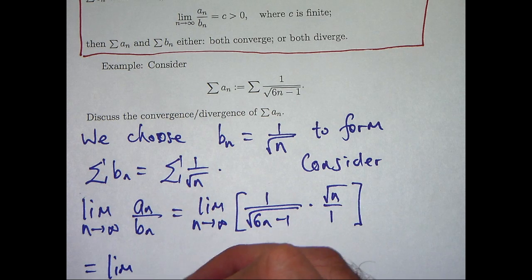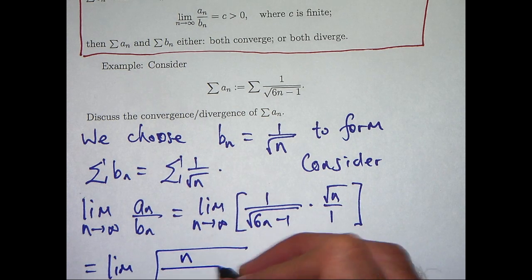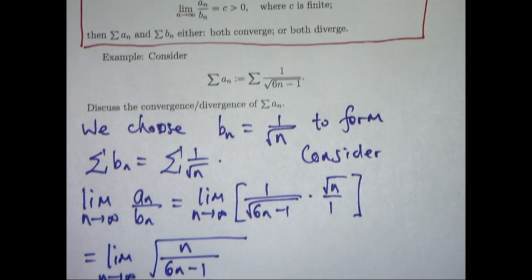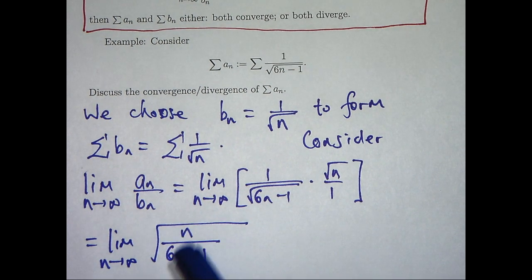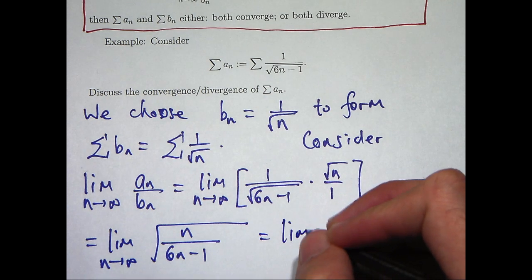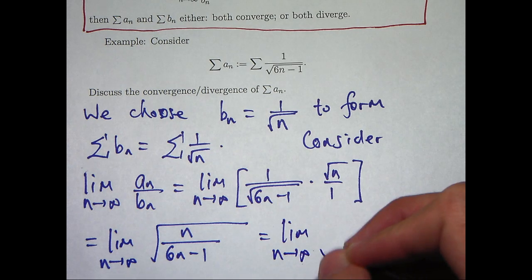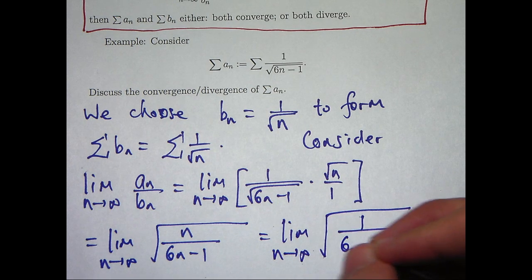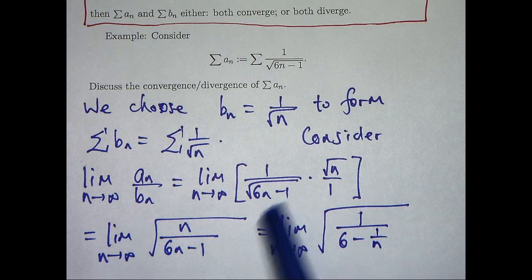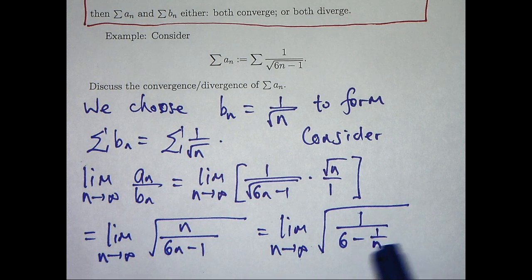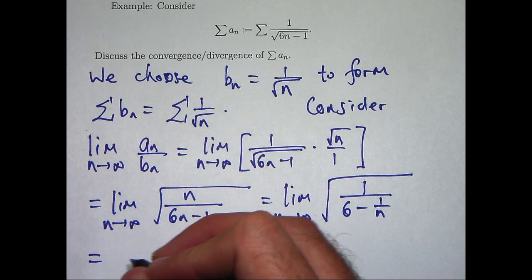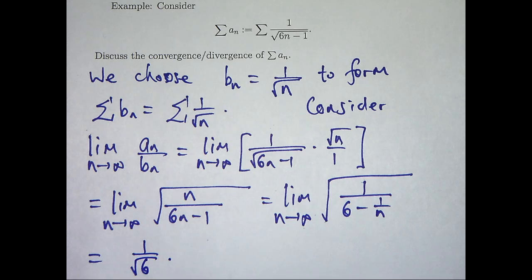Alright, so I'm going to put everything under the one square root sign. And then I can even take it a bit further by dividing top and bottom inside the square root sign by n. So now I'm in a position to take my limit here. This is obviously going to go to 0 and I'm going to get 1/√6.